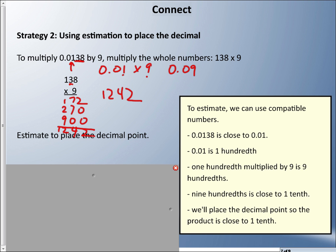So, our answer is going to be close to 0.1. So, where am I going to put that decimal? Well, I can't put it here. That's 124. I can't put it there. That's 12. So, I'm going to put it right there. I'm using estimation to place that decimal point. So, 138 ten-thousandths times 9 is 1,242 ten-thousandths. And again, that number is lower than our whole number.